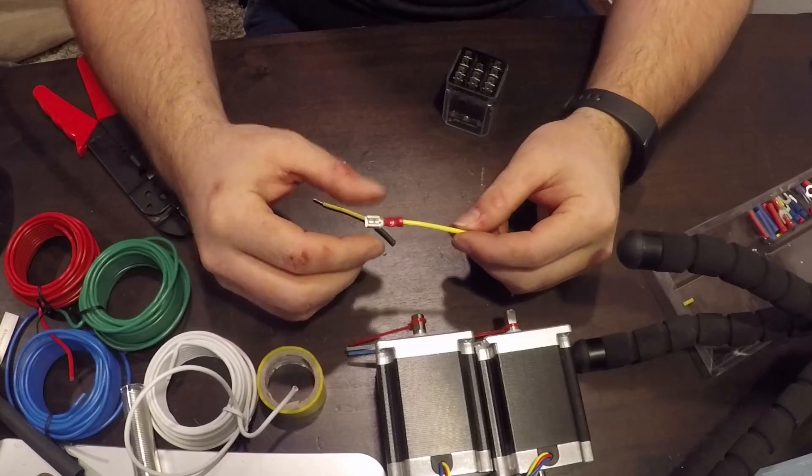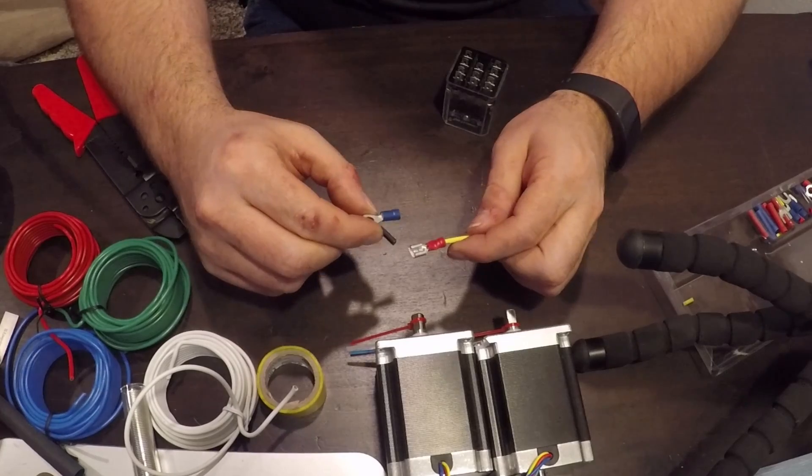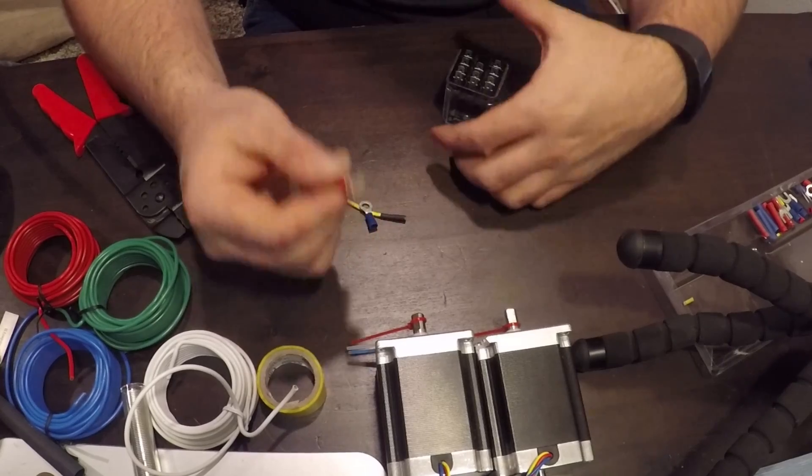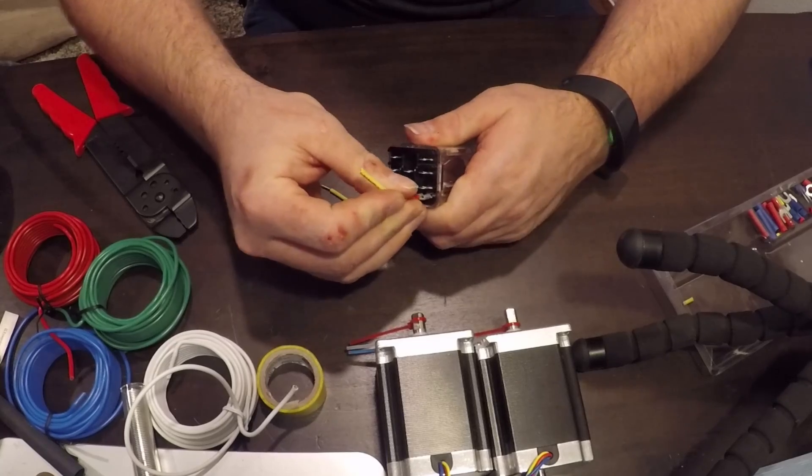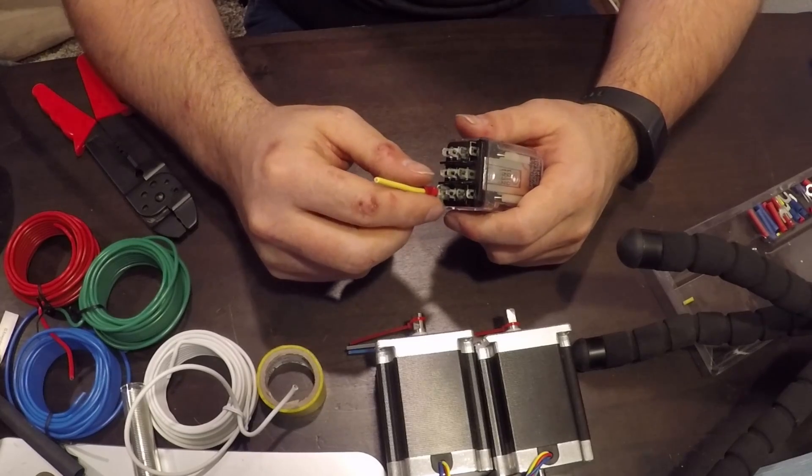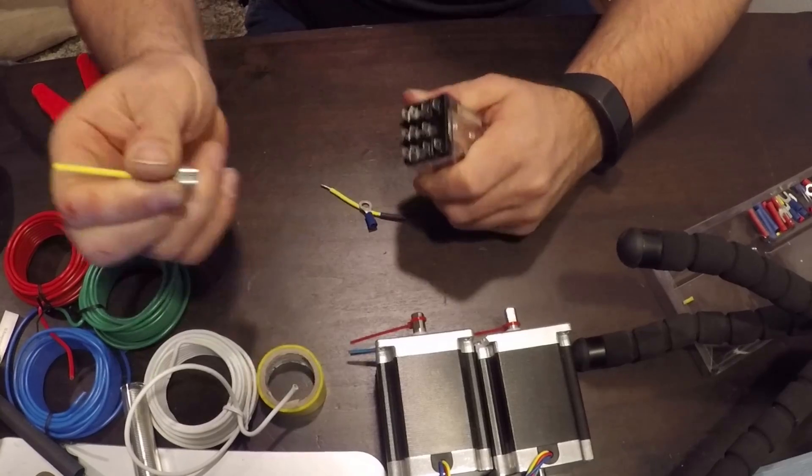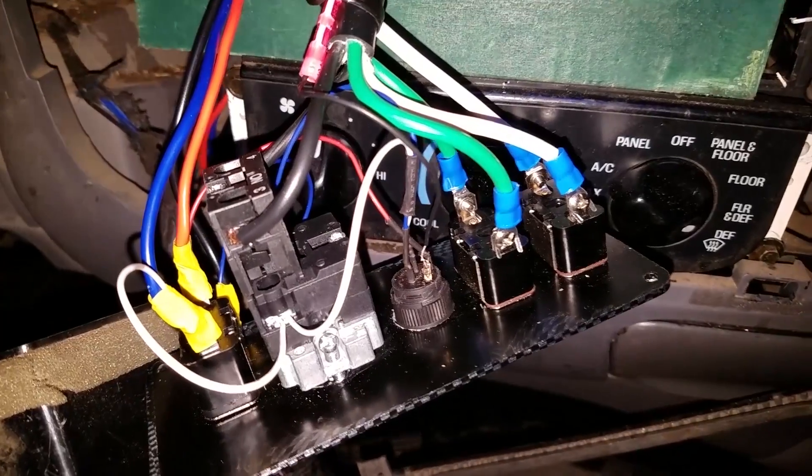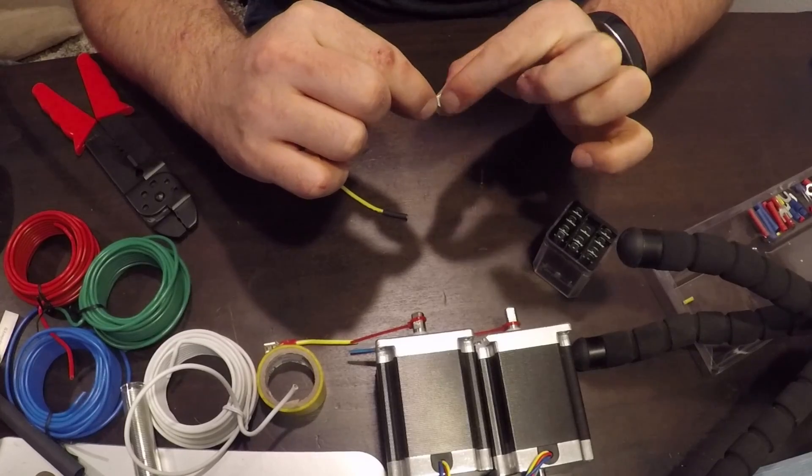Another type of termination you're typically going to see is a spade connector or a ring terminal. And these are crimp-on just like butt splices, but they're also removable. The type of application you would typically see these, for a female spade connector, you'd see that on a relay. Because obviously you're able to just solder directly onto these terminals. The problem is it's going to be really messy and it's going to be a lot more difficult to remove them. But when you use a spade connector like this, you're able to just go ahead and slip it right off. And the application where you would typically see a ring terminal is on a switch or something where you have to screw directly down to the terminal.